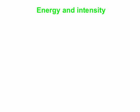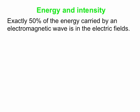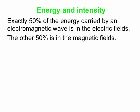So we'll start in on energy and intensity. The first thing that's nice to know is that in an electromagnetic wave, exactly 50% of the energy is in the electric fields. So that begs the question, where is the other 50%? An electromagnetic wave is made up of oscillating electric and magnetic fields, and so the energy is actually split 50-50 between the electric fields and the magnetic fields.